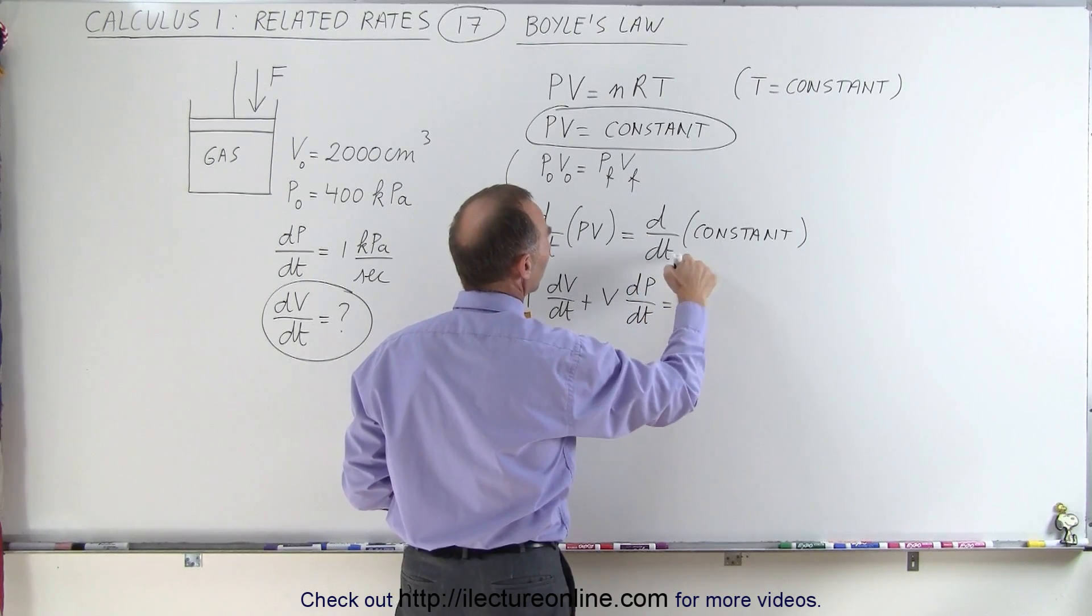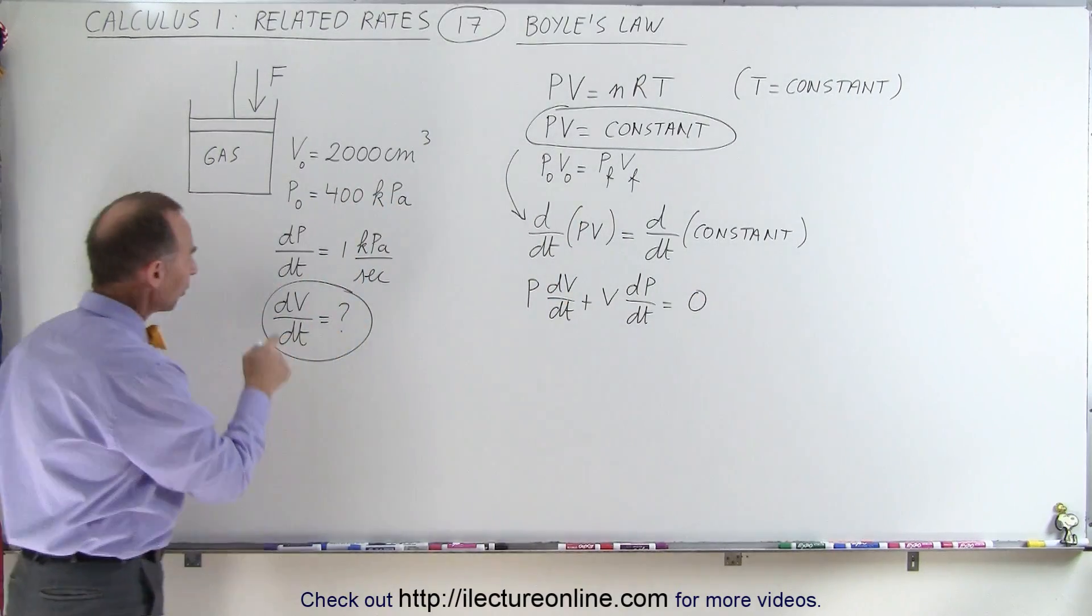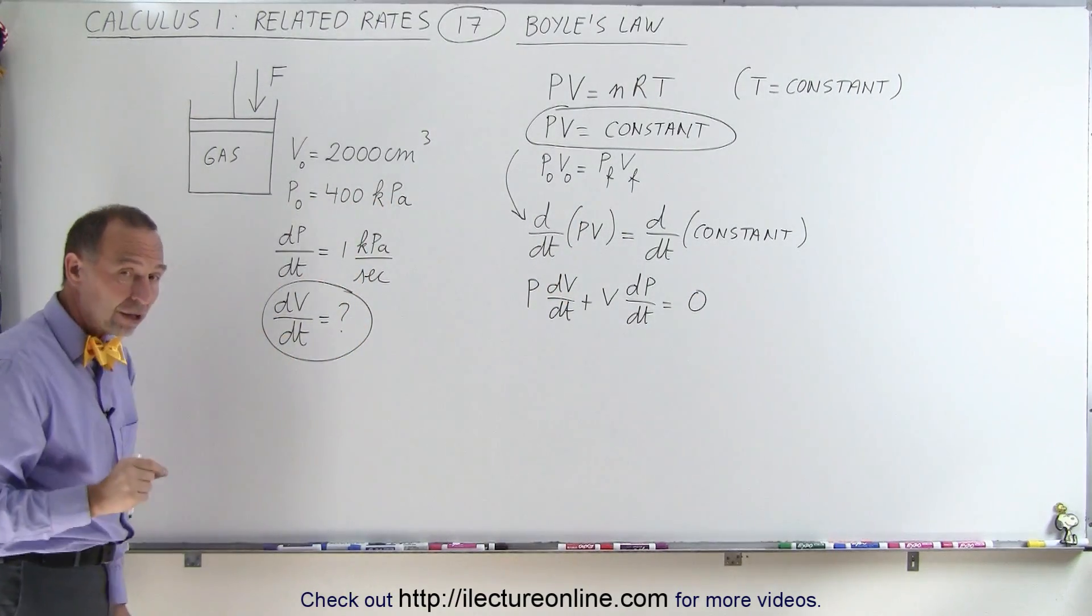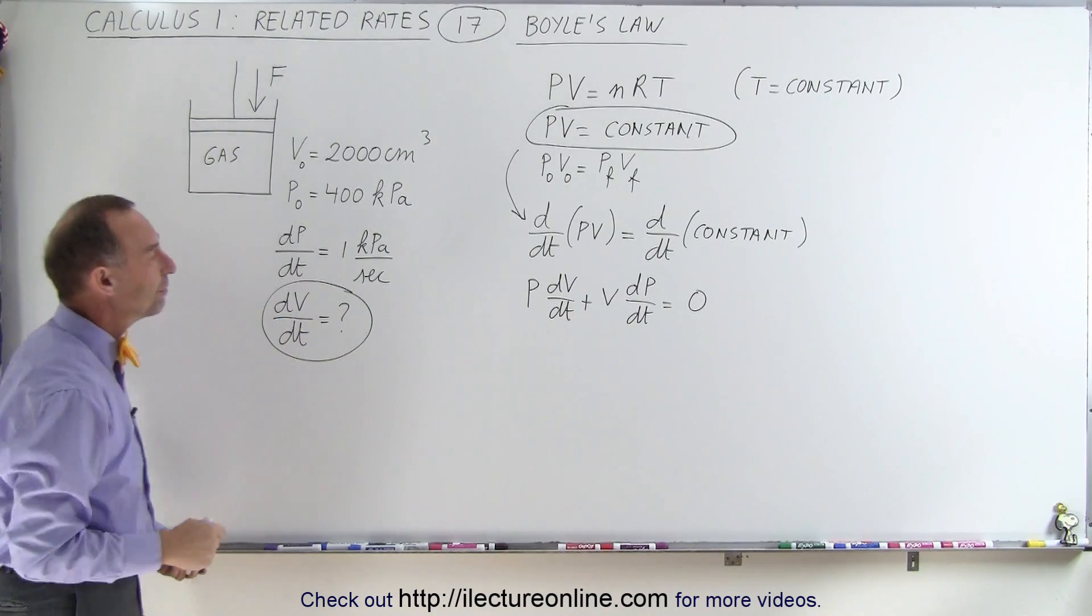And that has to equal the rate of change of a constant, which is zero. What we're looking for is the change in the volume with respect to time, which means we have to solve that equation for dV dt.